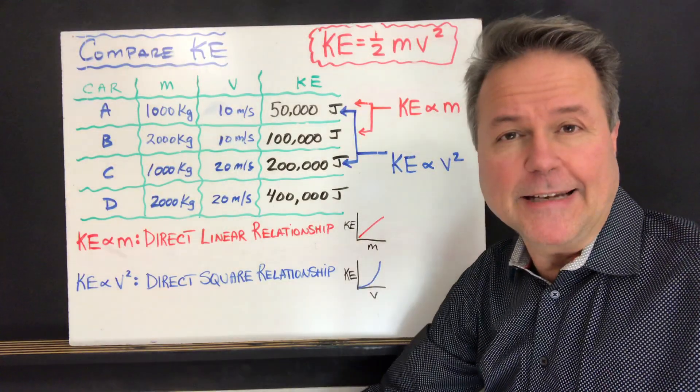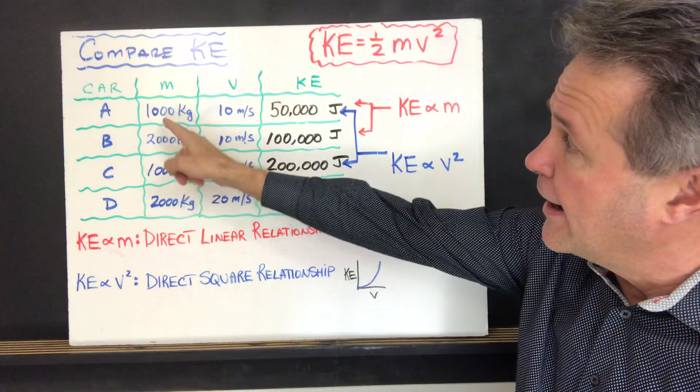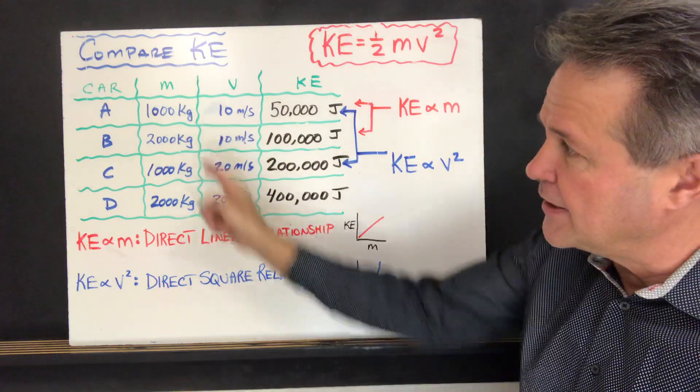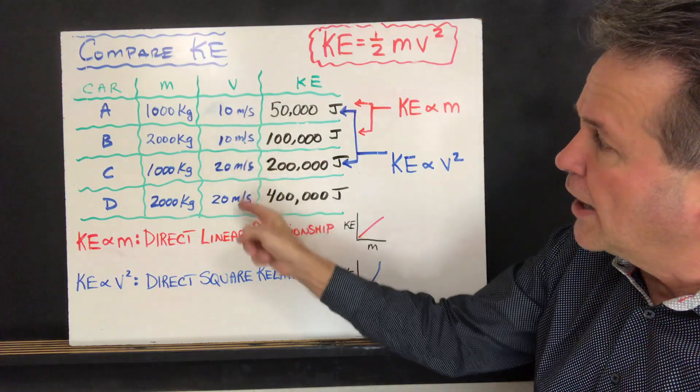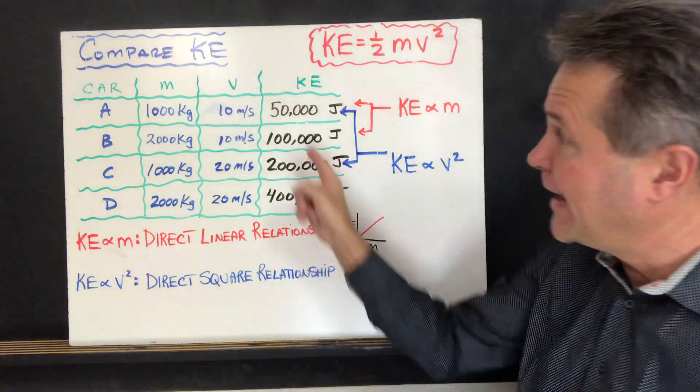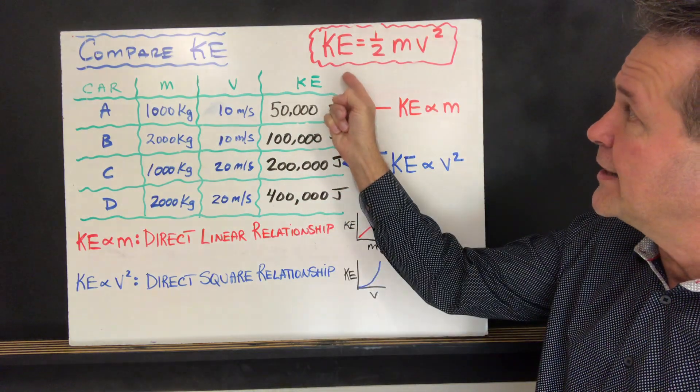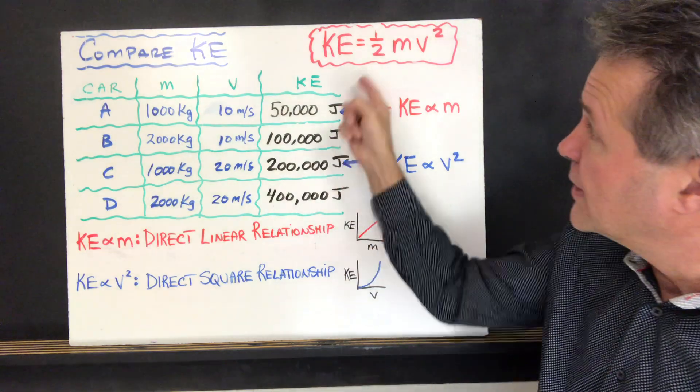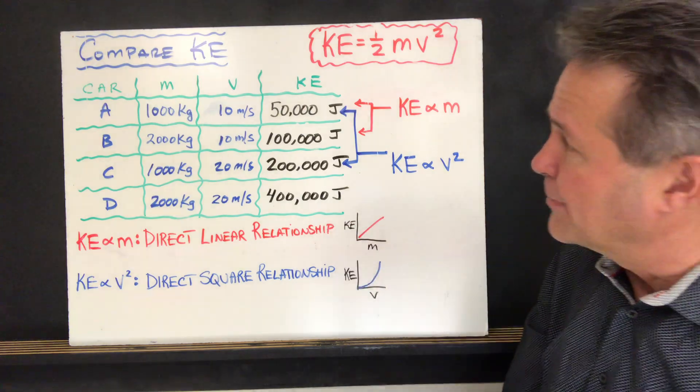So let's compare the kinetic energies of four different vehicles. We have four cars, two of them have a mass of 1,000 and two of them have a mass of 2,000. And we have different velocities, either 10 or 20 meters per second. And I've calculated the kinetic energy of all four using the formula KE is equal to one half mv squared. So you can test the formula yourself on these numbers here.